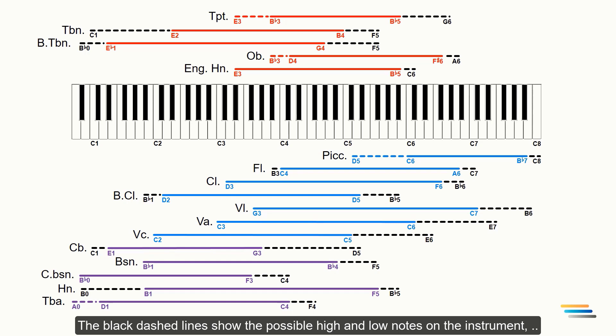The black dashed lines show the possible high and low notes on the instrument which should be omitted due to playing difficulties or lack of sound on the instrument. Any register of the instruments shown with a whole line can be used in solo writing depending on the music style.